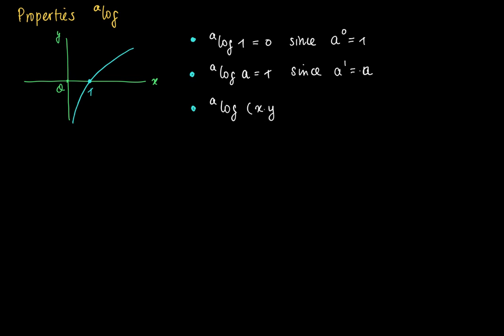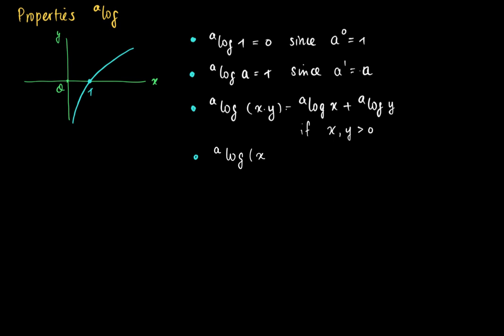There are also some other properties. The a log of (x times y) equals the a log of x plus the a log of y, but only if x and y are both positive. So this identity holds for x larger than 0 and y larger than 0, since the domain of a log is (0, infinity). Also, there's a very convenient rule which says that a log of x to the power r equals r times a log of x, so I can just take out the exponent r.